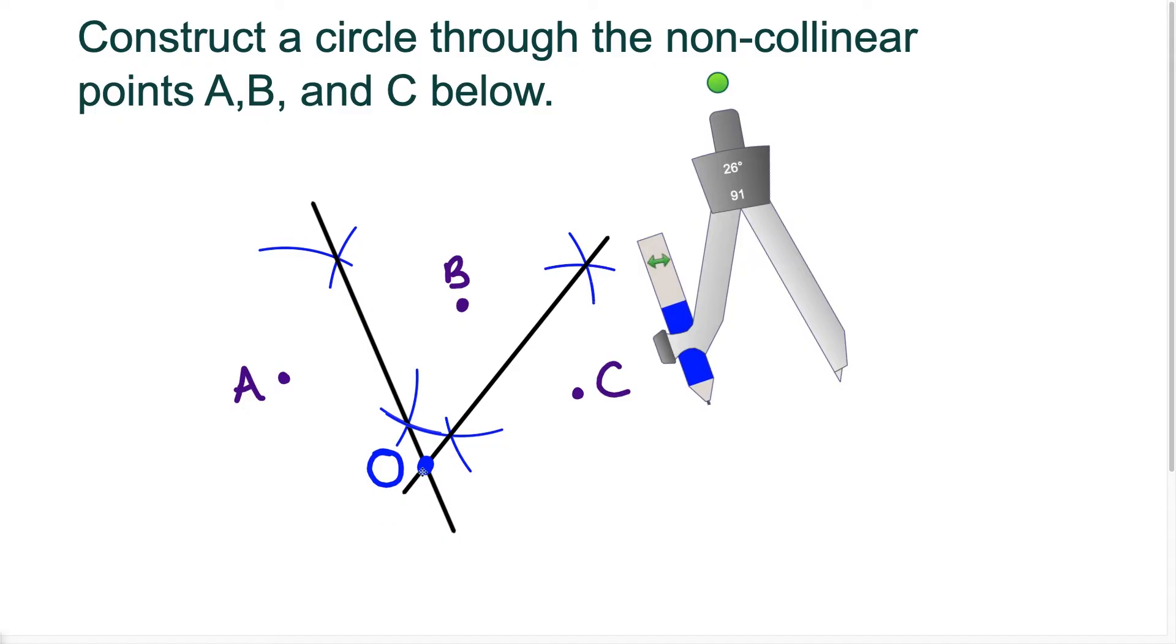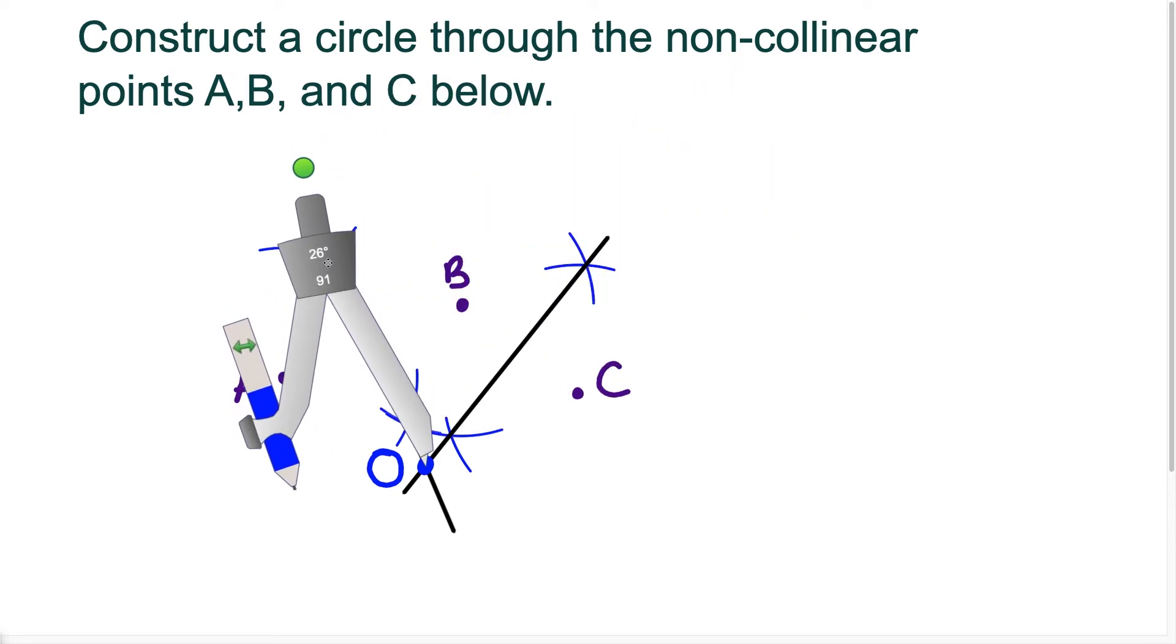So the intersection of those two represents the point that is the same distance away from A, B, and C. So that's why this process once again does work.